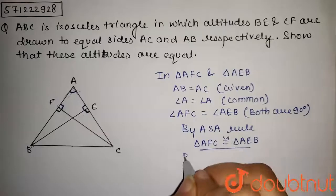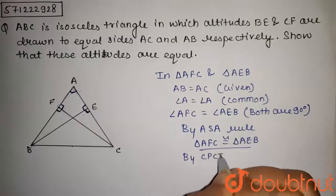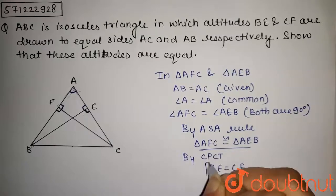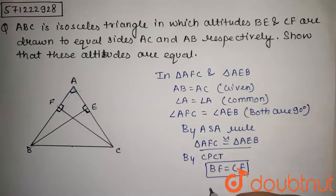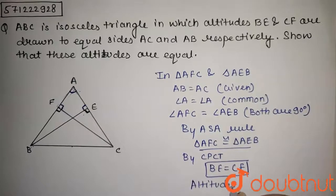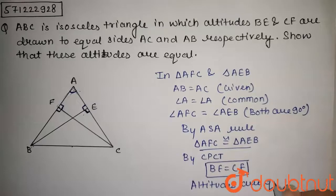So we can say that by CPCT, BE is equal to CF, which means their altitudes, these altitudes are equal.